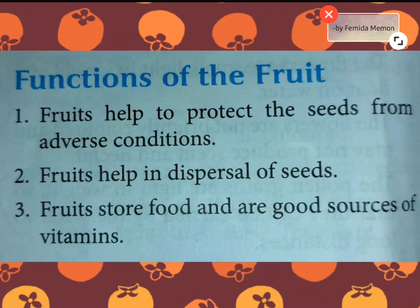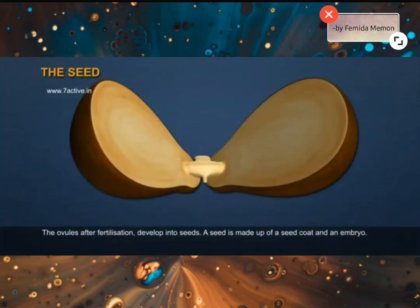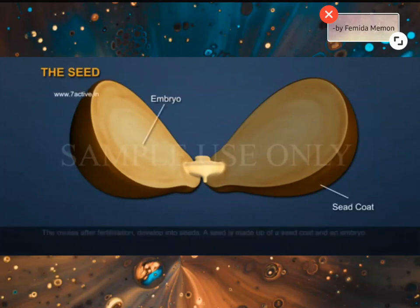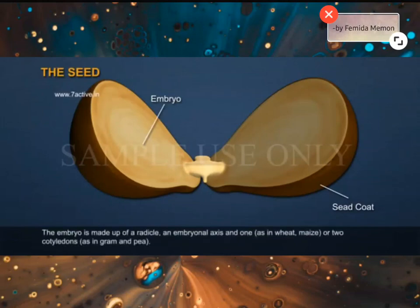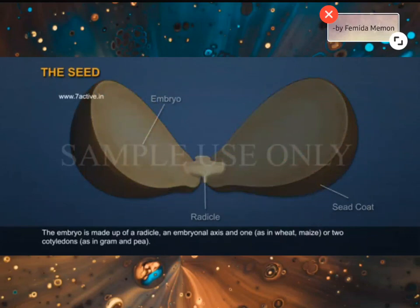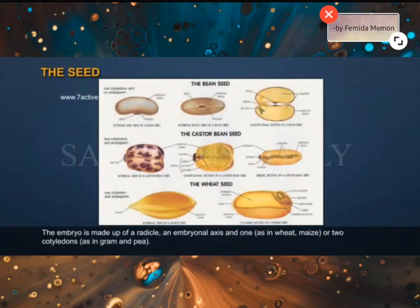Functions of the fruit: 1. Fruits help to protect the seeds from adverse conditions. 2. Fruits help in the dispersal of seeds. 3. Fruits store food and are good sources of vitamins. The seed: the ovules after fertilization develop into seeds. A seed is made up of a seed coat and an embryo. The embryo is made up of the radicle, embryo axis, and one cotyledon as in wheat and maize, or two cotyledons as in gram and pea.